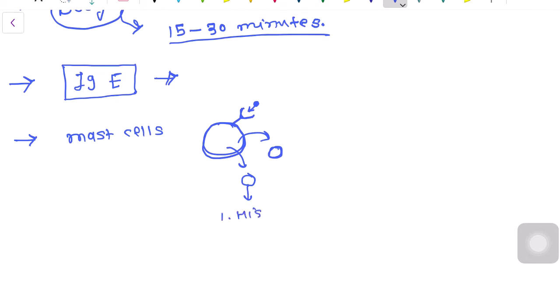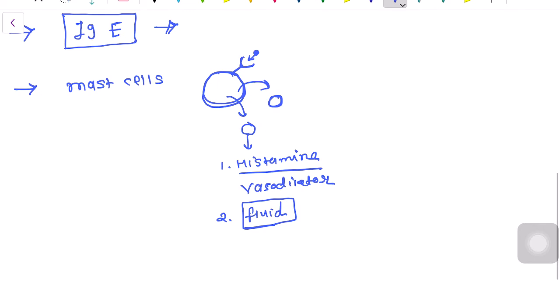The chief inflammatory mediator is histamine, which is a vasodilator. It causes dilation of the surrounding vascular system and fluid comes out from the vascular compartment to the interstitial space. Vasodilation and fluid accumulation lead to edema.